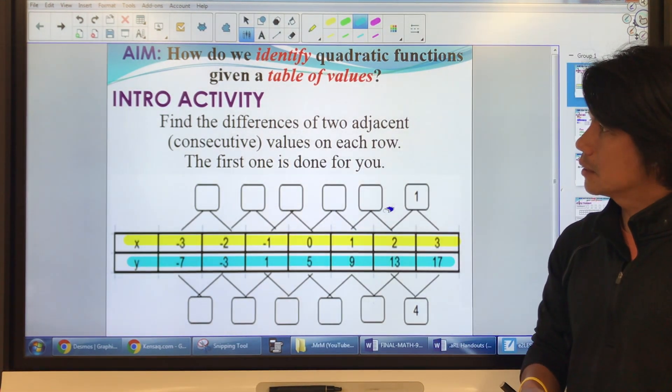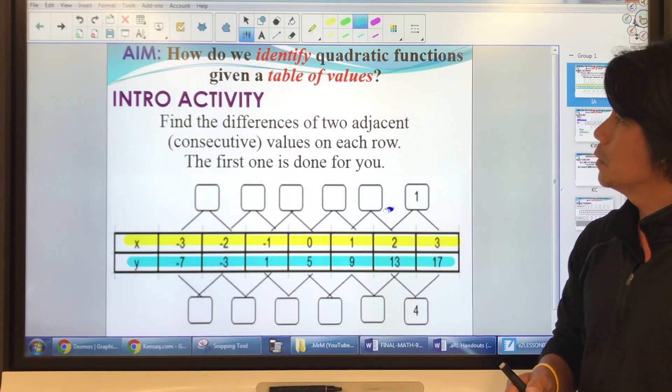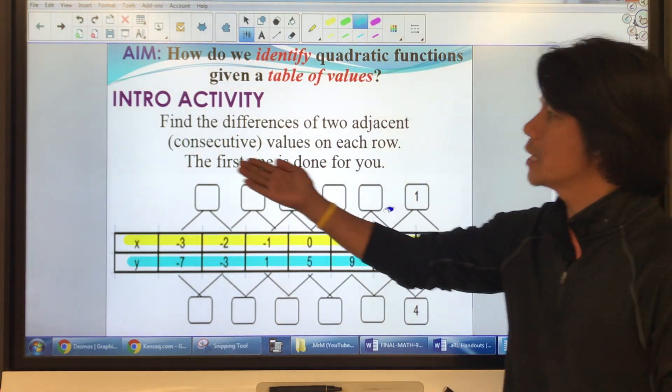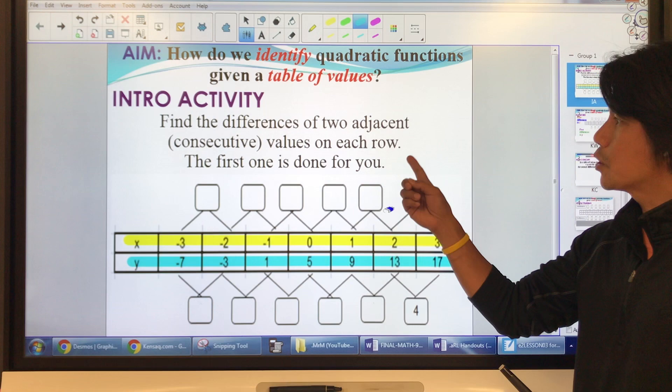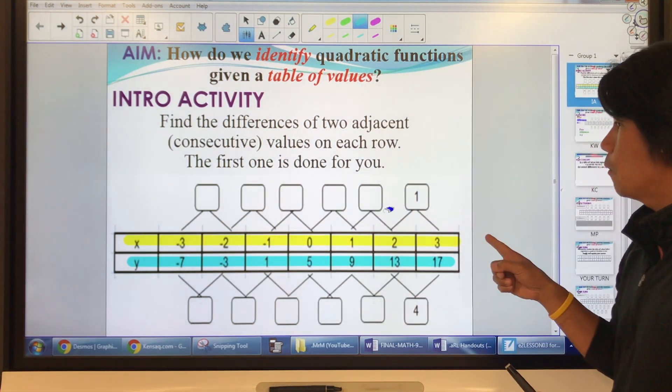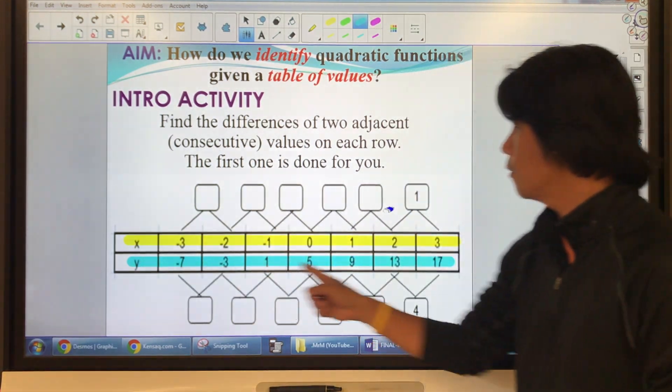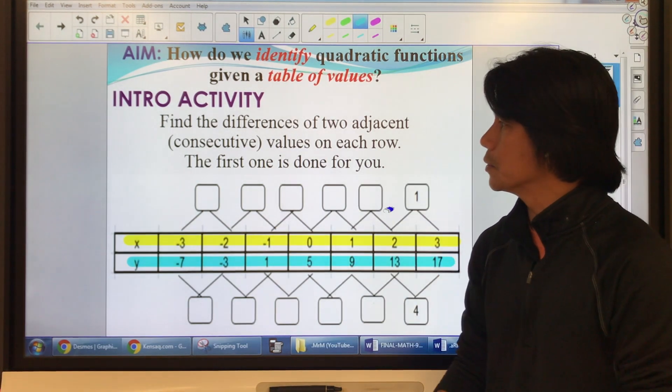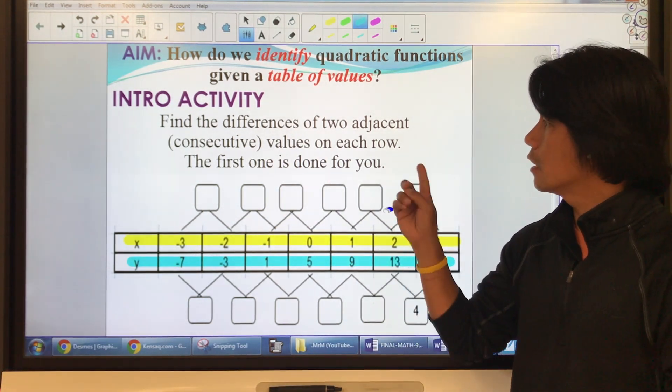Let's go straight to the intro activity to find the differences of two adjacent or consecutive values on each row. We have two rows here, the row for the x values and the row for the y values. The first one is done for you.